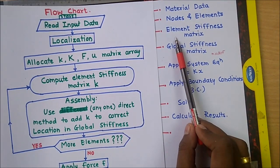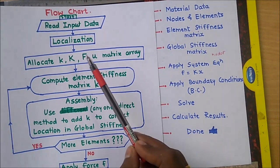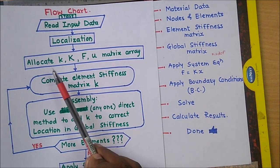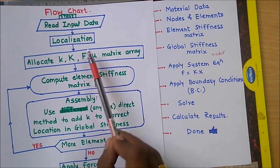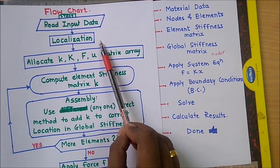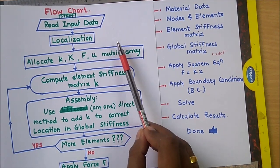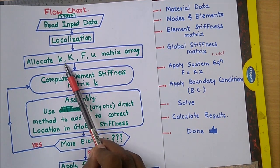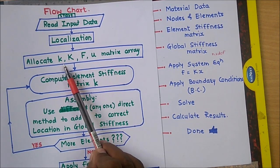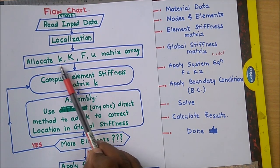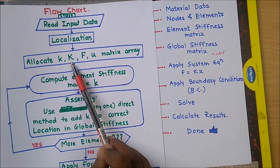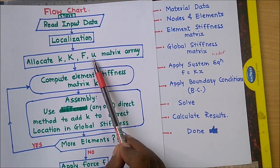After that we have to prepare a stiffness matrix. After localization we will get the area value, E value, and mu value. From that we can prepare the element stiffness matrix. But here we also have to allocate the element stiffness matrix, global stiffness matrix, force matrix, and U matrix array.